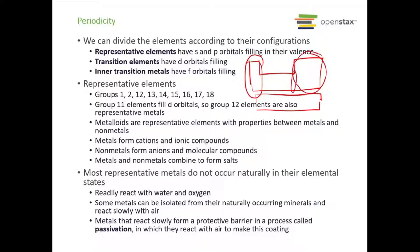Groups 13 through 18 are also representative elements, and group 12 as well. You have your transition elements, which is the center area — these have D orbitals in their valence that are filling up. And then the inner transition metals, which are the bottom two rows, have F orbitals that are filling up. The reason group 12 is included as representative is that by group 11 their D orbitals are completely filled, so in group 12 it's actually an S orbital on their valence, making them representative elements.